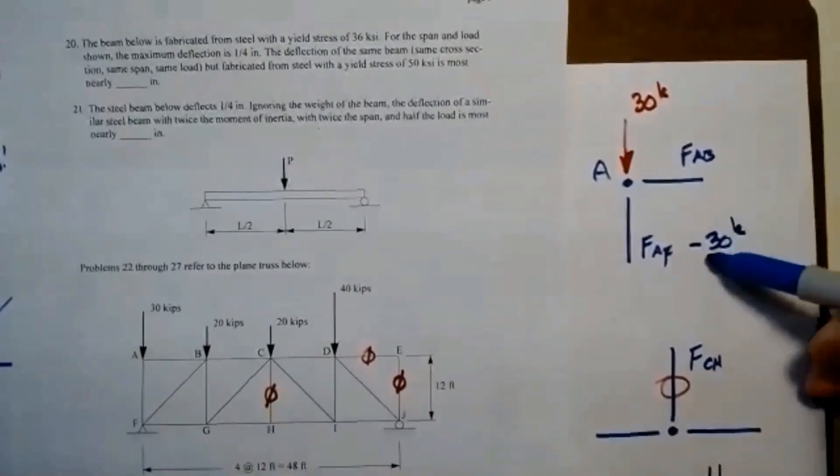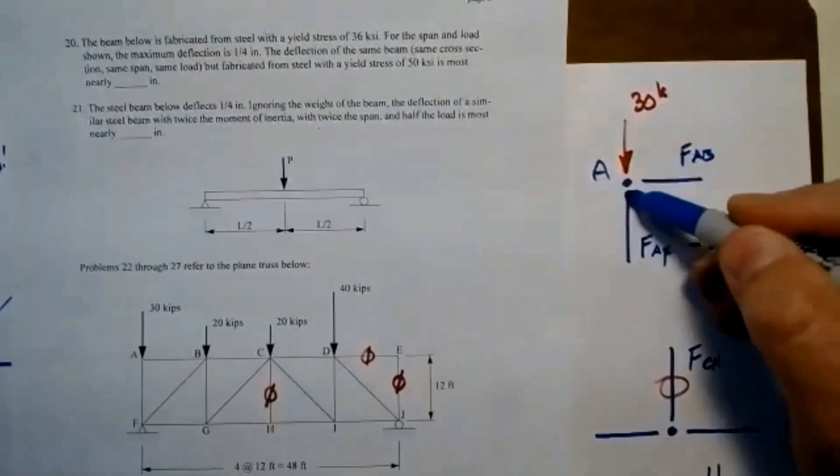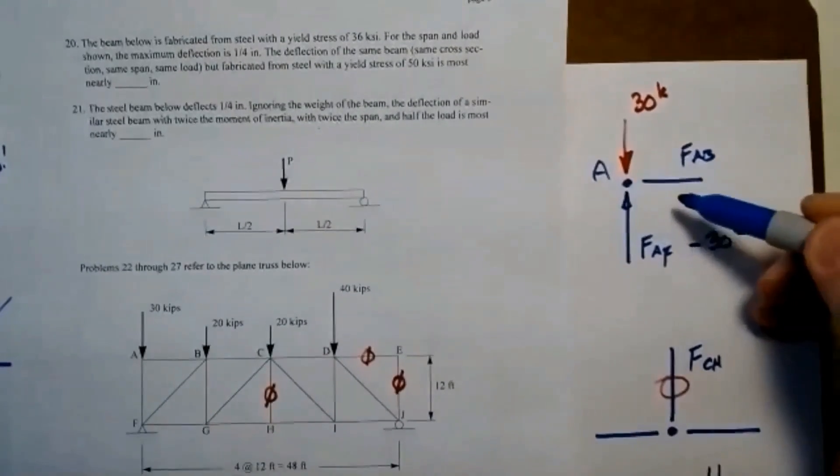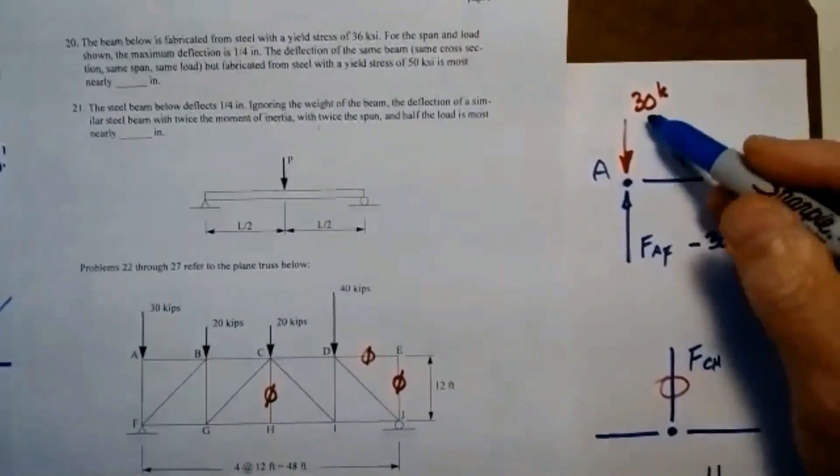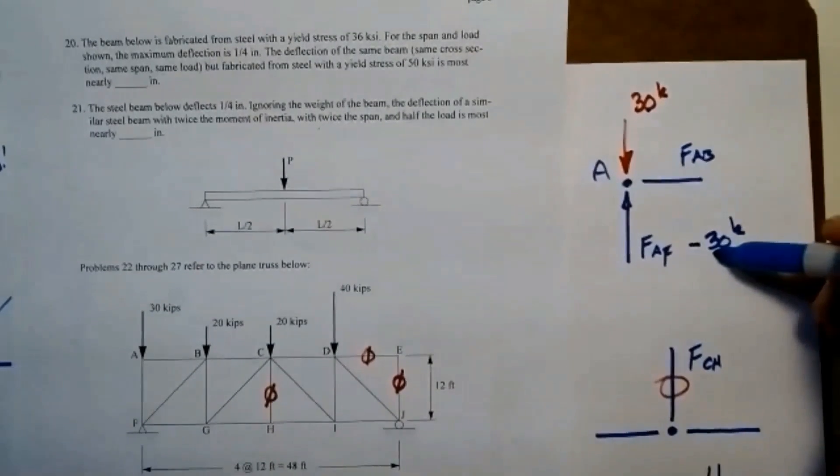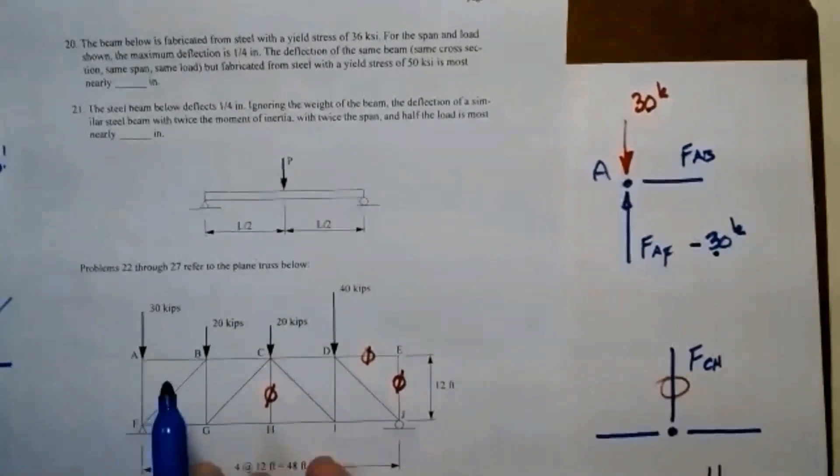It's going to be minus, it's going to be in compression. It's going to have to exert a push onto the joint. And sum forces in the Y, this applied load is going to be countered by this compression force in FAF.